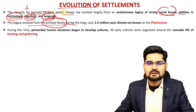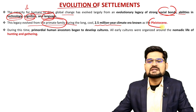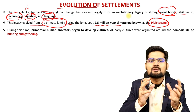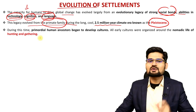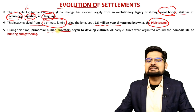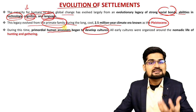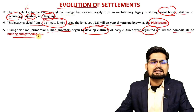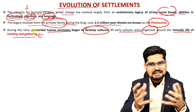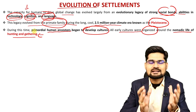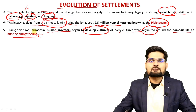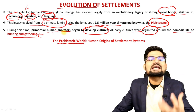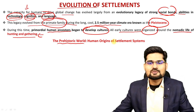The legacy evolved from the primate family — what we call the prehistoric family — roughly 2.5 million years ago, known as the Pleistocene in the geological timescale. The Pleistocene was the cool phase that ended almost 11,700 BCE. During primordial times, human ancestors began to develop cultures, and all these early cultures were organized around nomadic life and hunting and gathering. Before we became settlers, we were hunter-gatherers.